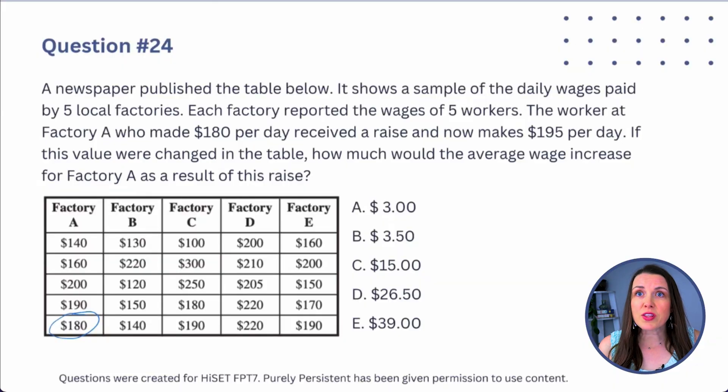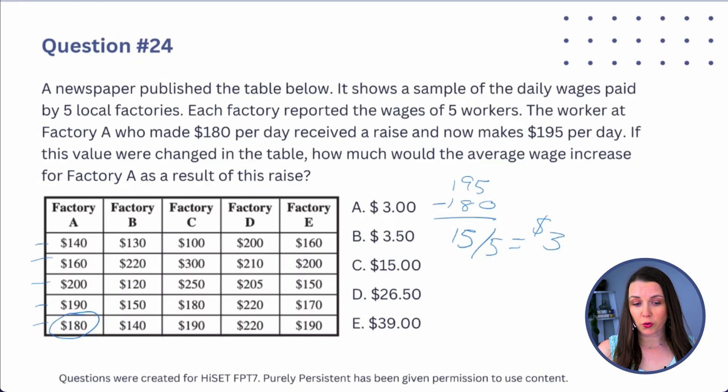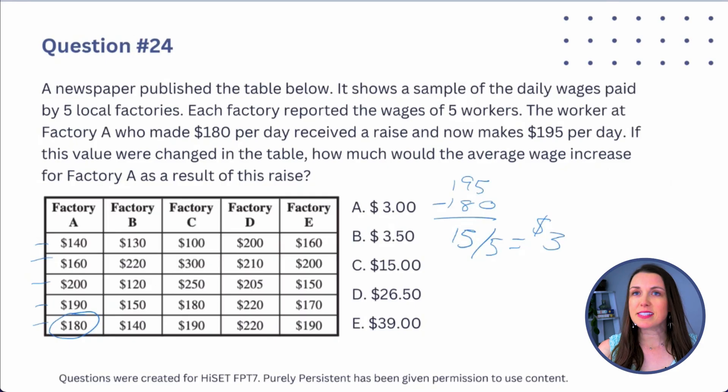I'm a human and I make mistakes — and I've seen mistakes in books too. I'm not sure if there's a mistake in this question or if I'm just not understanding it, because the given answer doesn't make sense to me. The answer provided is $3: they took 195 − 180 = 15, then divided by 5 workers to get $3. That's the stated answer, but it doesn't make sense to me that one person's raise of $15 would mean the average increase is $3.